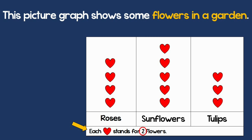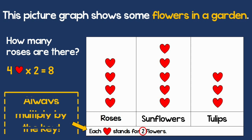This means that for each heart, there are two flowers. Let's see how many roses we have. I have four hearts. Each heart is two flowers. So I can multiply 4 hearts times 2 equals 8. I have 8 roses. So that's how you use the key. You multiply the number of marks by the key.